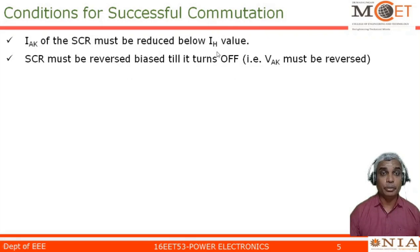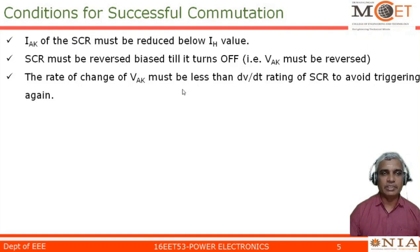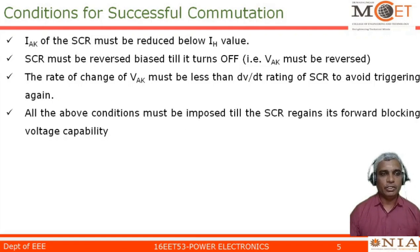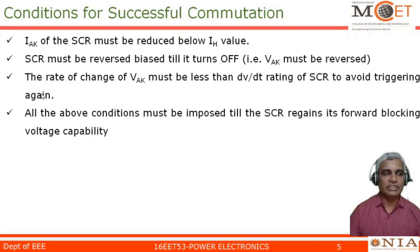During that reducing time, the SCR should be in a reverse-biased condition, so VAK must be reversed. This is the second condition. When VAK is reversed, care should be taken that this VAK must be less than the dV/dt rating, otherwise it will make the SCR trigger again. These are the three conditions which are very important to make the SCR turn off successfully. These conditions must be imposed until the SCR regains its forward blocking voltage capability. The commutation circuit required to turn off the SCR should satisfy all three conditions successfully.